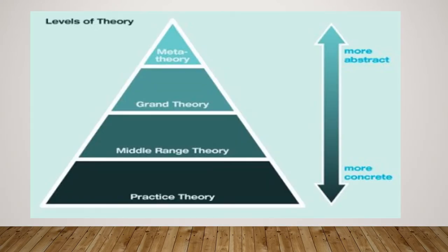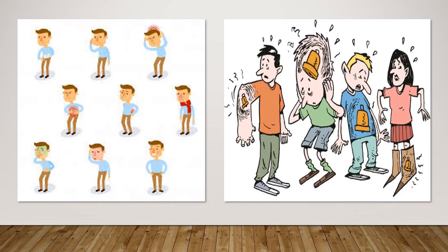The middle range theory of unpleasant symptoms was proposed as a means for integrating existing information about a variety of symptoms. Middle range nursing theories tend to be more specific and focused, offering more concrete connections that attempt to describe, explain, or predict certain phenomena in clinical practice. TOUS has three major parts: the symptoms, factors that influence the symptoms, and the performance outcome, such as quality of life.